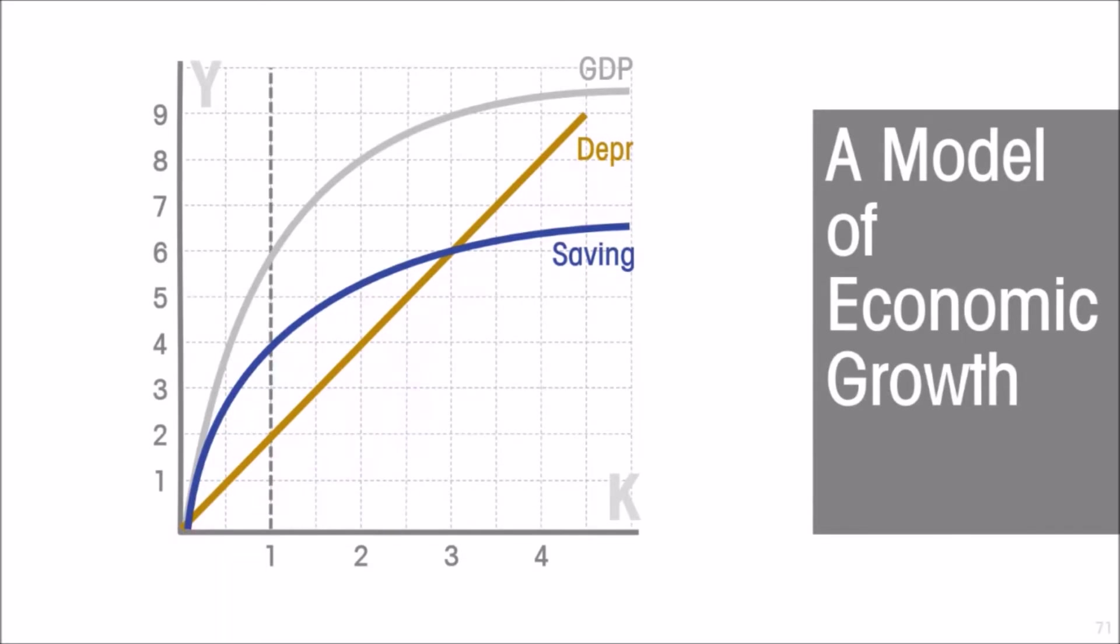Suppose picking an arbitrary starting point, we have one unit of capital. By the way, one unit of capital can be a billion dollars of capital, it can be a billion tons of capital, or it can be one cutlass. If we have one unit of capital, our model tells us that output and therefore the real income in this economy is going to be six, and savings and investment is going to be four.